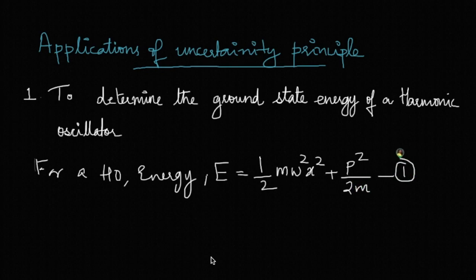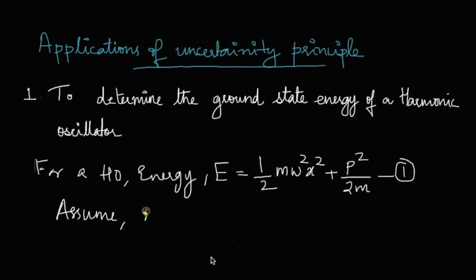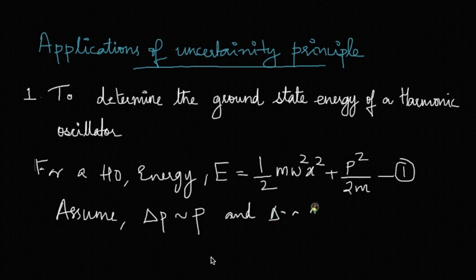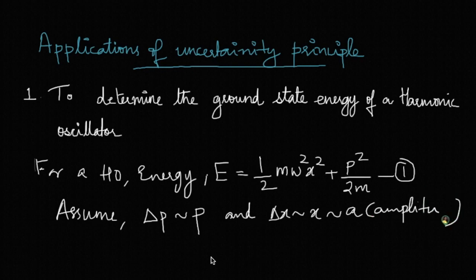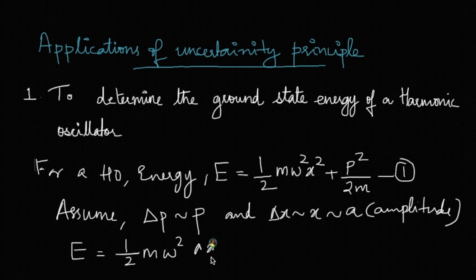We are supposed to use the uncertainty principle alone to obtain the ground state energy of the harmonic oscillator. Let's assume that the uncertainty in momentum is approximated to the momentum itself, and the uncertainty in position is the position itself, which in this case is the amplitude a. Substituting these back, we get E = ½mω²(δx)² + (δp)²/2m. Let's call this equation 2.